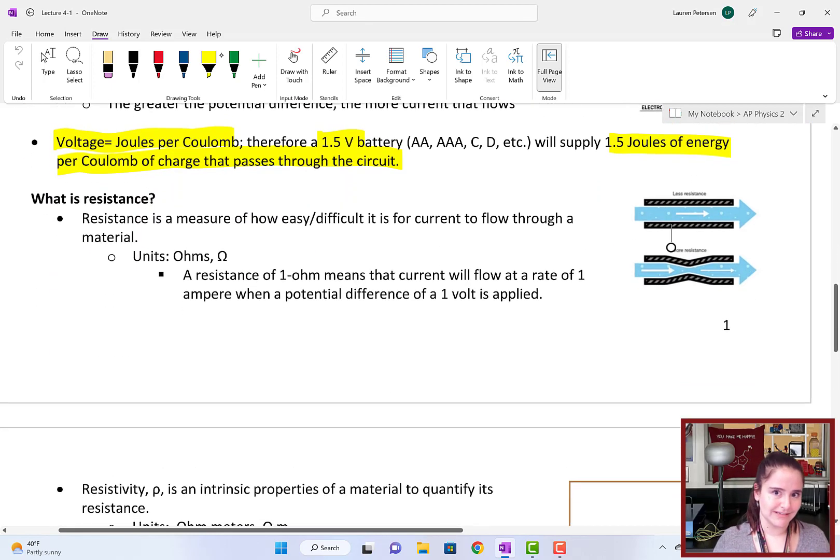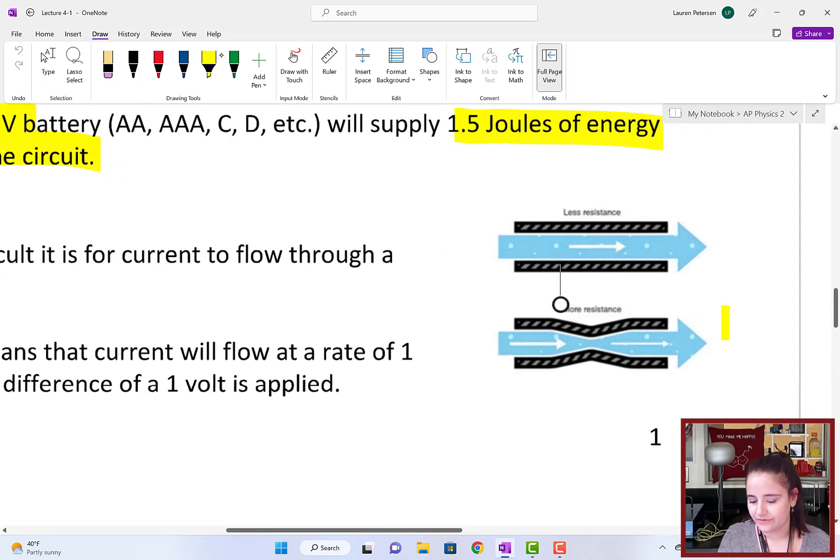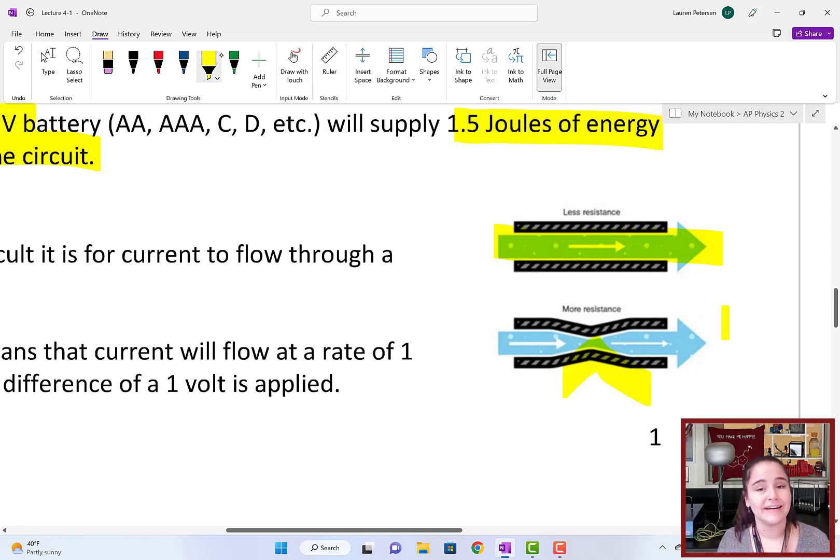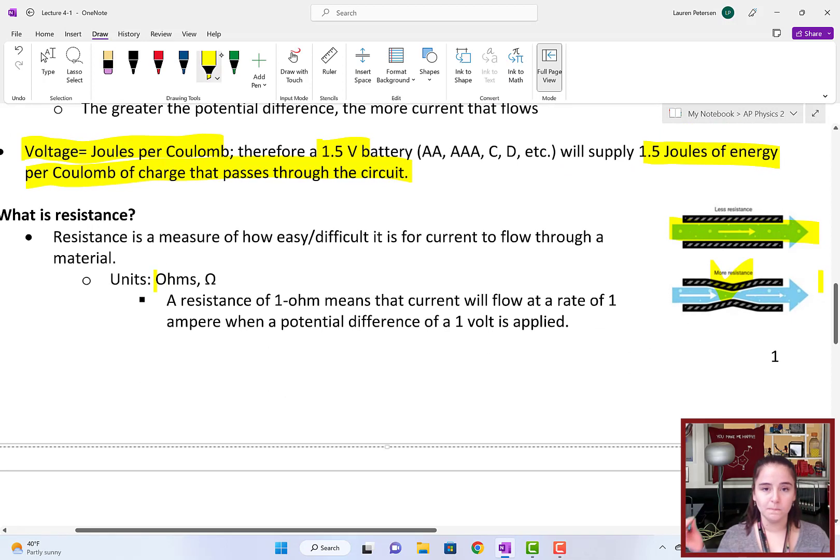So what about resistance? In any circuit, there is going to be resistance. It's a measure of how easy or difficult it is for the current to flow. You can use the analogy of a pipe. If you have less resistance, the current just flows through easily. If you have more resistance, that is like a narrow part of the pipe, something that's going to block that flow of current and make it a little bit more difficult to get through.